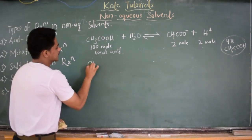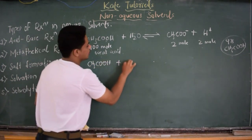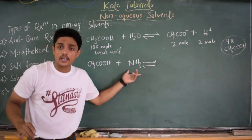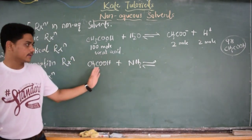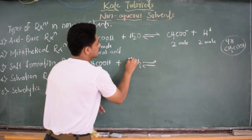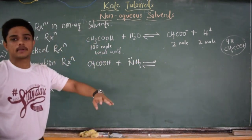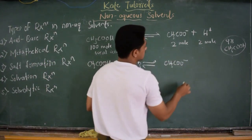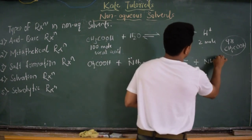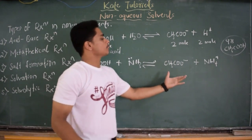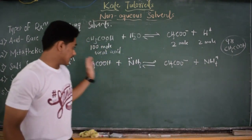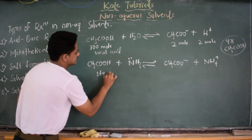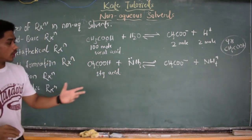Now if I consider CH₃COOH in presence of liquid ammonia — no water molecule — it is a non-aqueous solvent. Ammonia is basic in nature because of its lone pair of electrons; it pulls H⁺ from the acetic acid, causing complete dissociation. So we get CH₃COO⁻ plus NH₄⁺. If there are 100 moles, we get 100 moles of each. Therefore, in presence of liquid ammonia, acetic acid acts as a strong acid. That is the beauty of using liquid ammonia as solvent.